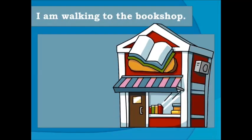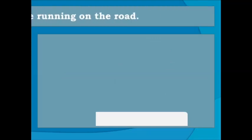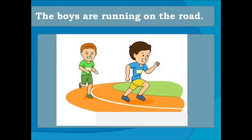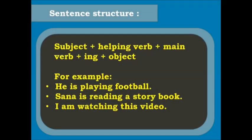Let's look at a few examples of present continuous tense: I am walking to the bookshop. John is washing his bicycle. The boys are running on the road. In these sentences, washing, walking, and running are examples of present continuous tense.